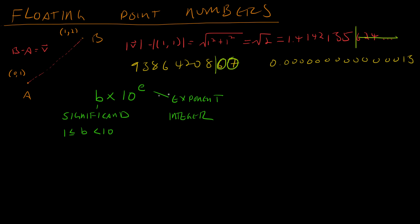And the computer uses some bits to represent b, the significand, and some bits to represent e, the exponent. I'll draw you a table. There are three kinds of floating point numbers. There are half precision, there is single precision, and there are double precision. And they each use a different number of bits to store the significand and the exponent.